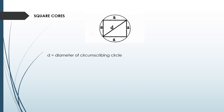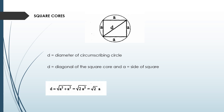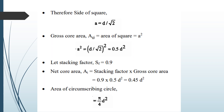d is the diameter of the circumscribing circle and also the diagonal of the square, where a is the side of the square. Using the Pythagorean theorem: d = √(a² + a²) = √2 · a, so a = d / √2. We can then calculate the area of the square: a² = 0.5 d².